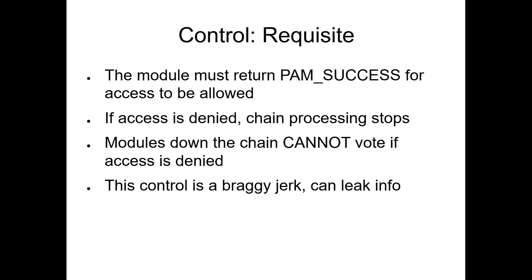Then there's 'requisite', which is required with attitude. The module must return success for access to be allowed, but if the module returns anything else, the chain immediately stops processing — no further calls to any module are made. This short-circuits the rest of the authentication process, which also means you can leak information to the user or an intruder, because later modules didn't run and the user isn't prompted for later things.